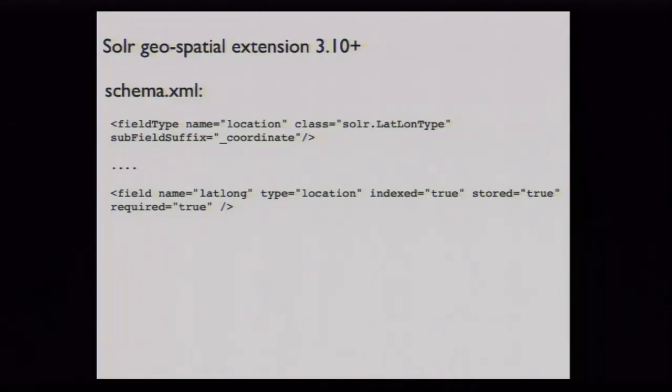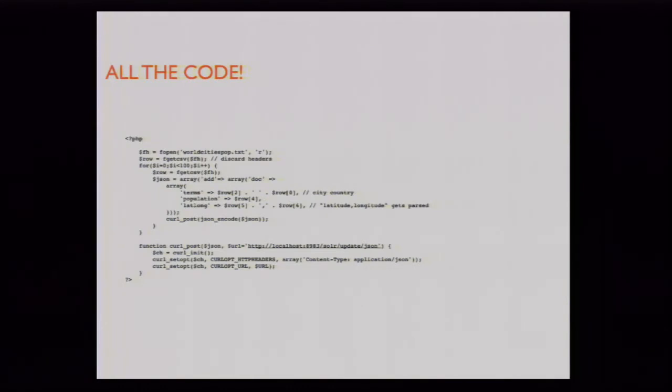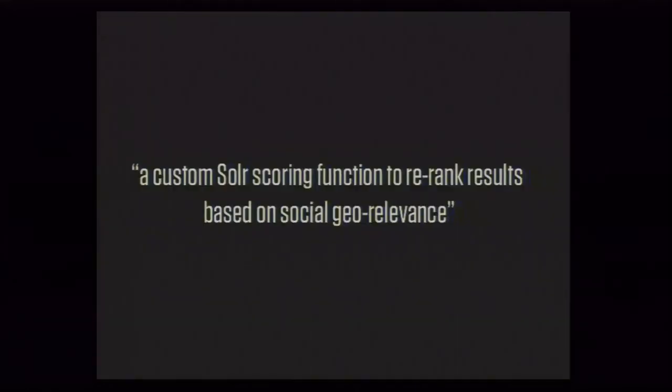How did we solve it? We solved it using Solr, a free dataset, some Bash scripts, an algorithm, and a guy who had been on the job for two days. This is how you add geocoding to Solr — you use the Solr lat-long type. This is the entirety of the code we wrote, in PHP rather than Bash. We created a JSON blob and posted it to a URL. Then we did the fancy part: a custom Solr scoring function to re-rank results based on social geo relevance.